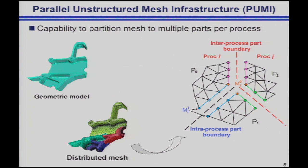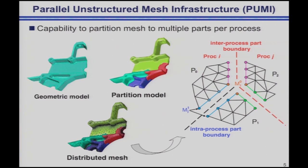We have a geometric model, a distributed mesh, and for managing that distributed mesh, what we refer to as a partition model — accounting for interactions between parts. If parts are on an individual node in shared memory, you still need to decide ownership. Across different nodes, you have to control communications in addition to controlling ownership. That is the responsibility of what we refer to as a partition model within this infrastructure.